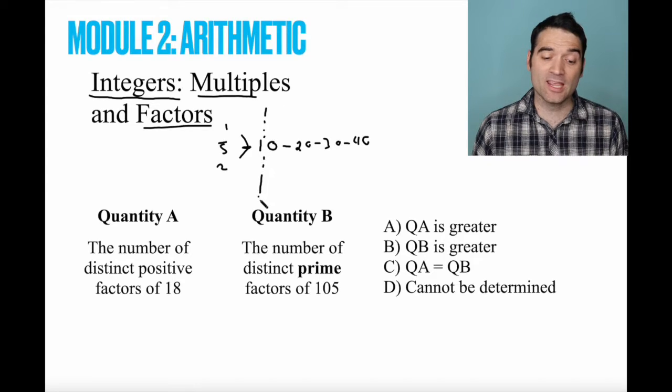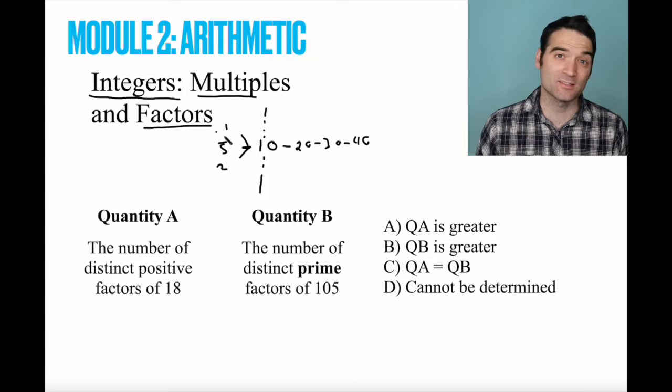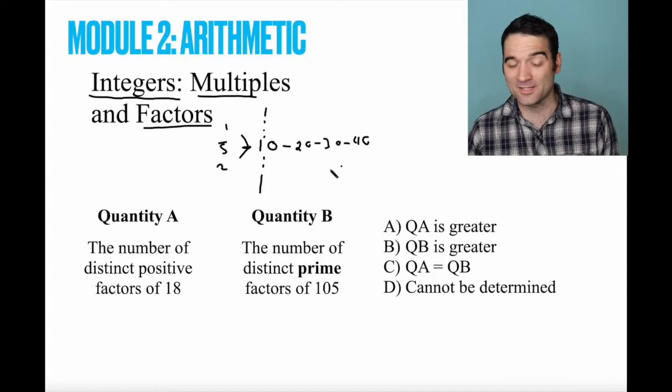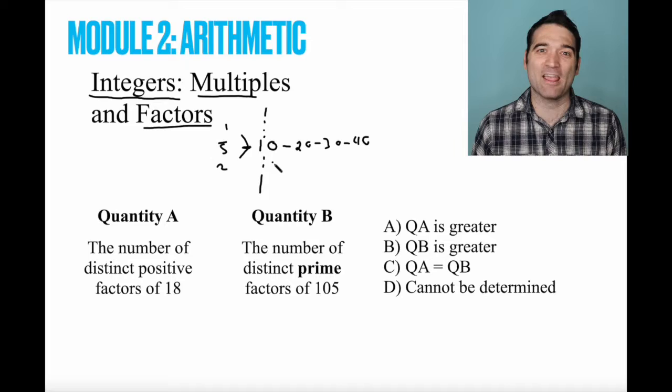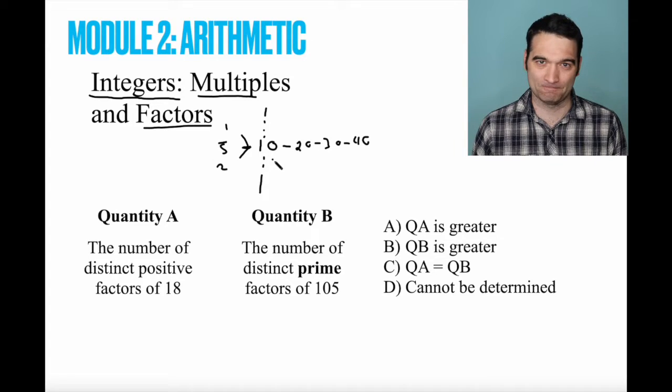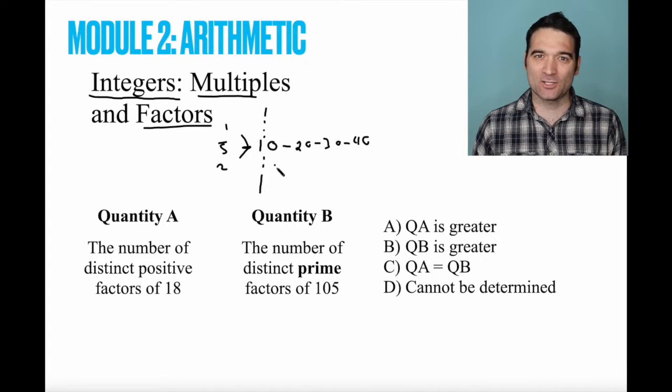10, of course, is a multiple of itself. So anything to the left of this is a factor. Anything to the right of this is a multiple. And 10 is both a multiple and a factor of itself. All right, let's get to it.